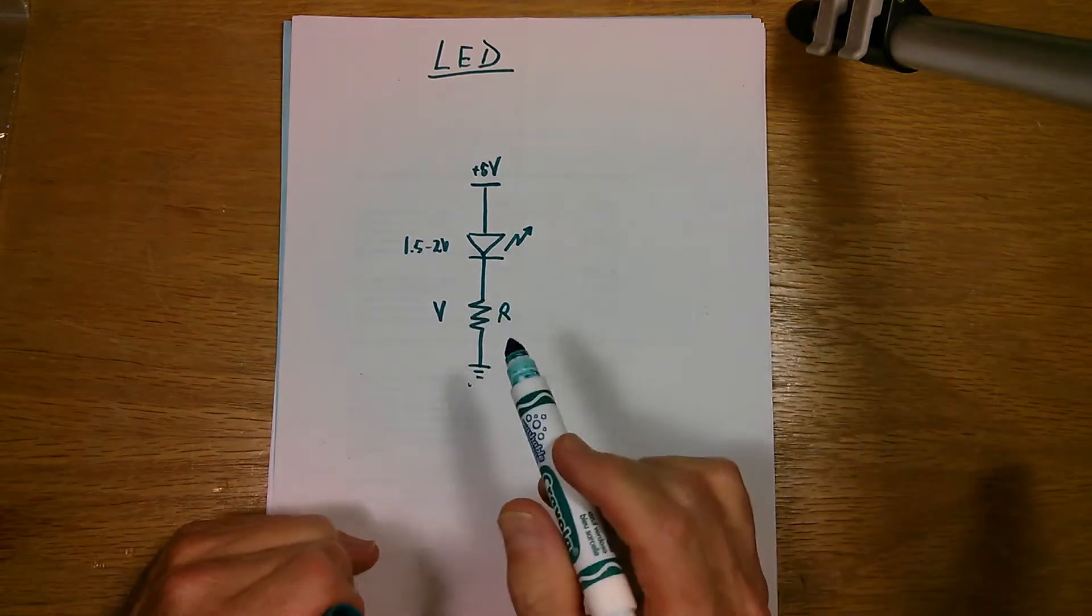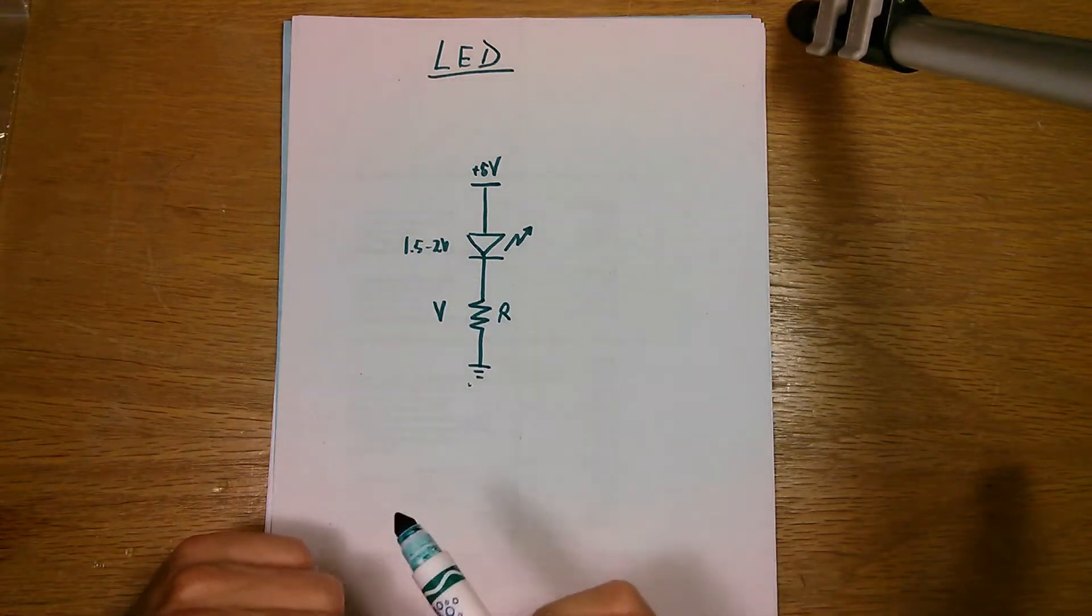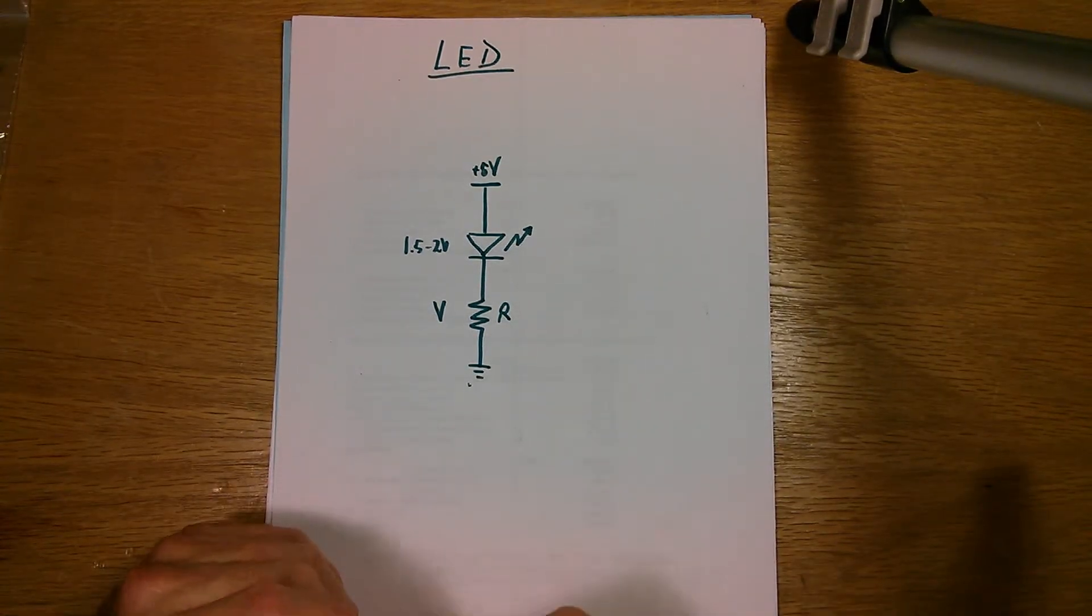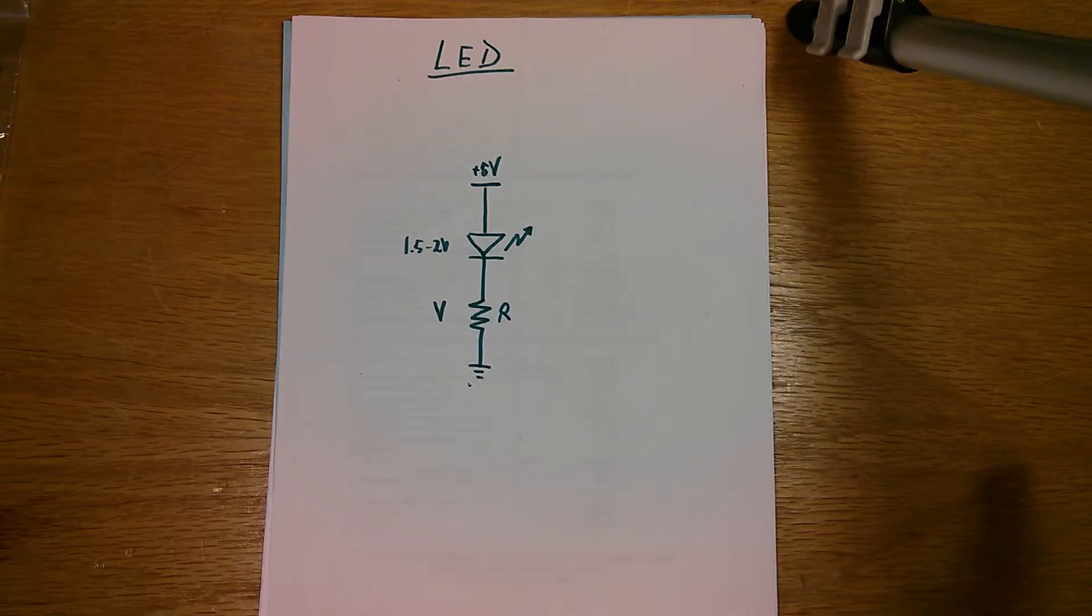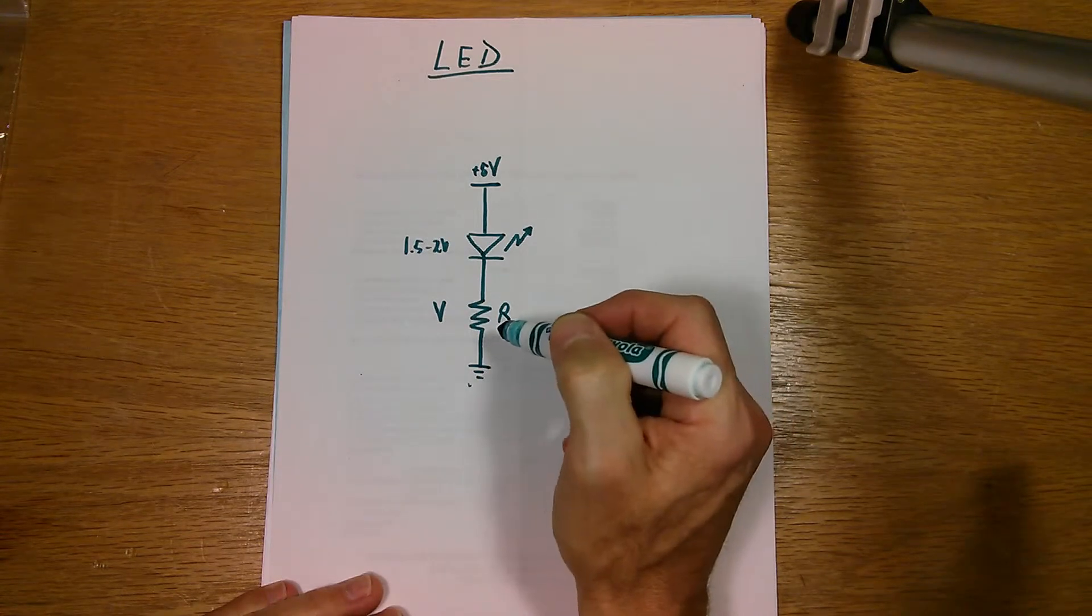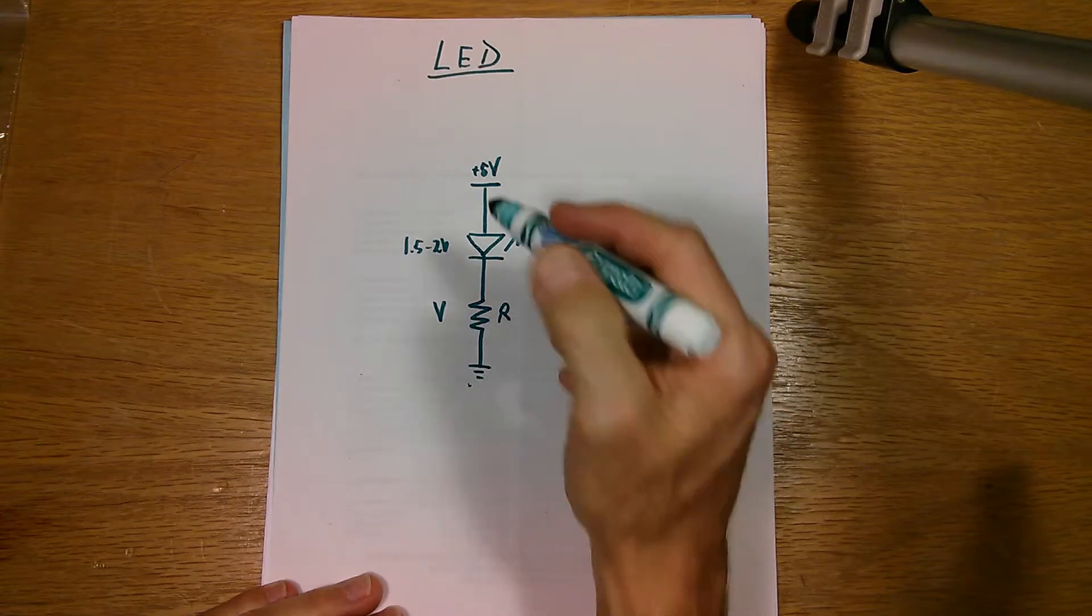So how do I pick a resistor here to limit the current? Well, it's kind of the voltage divider that I explained a little earlier in my resistor tutorial. And what we do is we figure out what the voltage is across this resistor and apply Ohm's law in order to figure out the value of resistance.